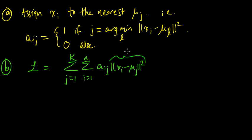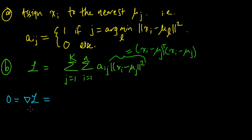This squared Euclidean distance can be written as the dot product of (x_i − μ_j) with itself. Now we do the standard calculus thing: set the gradient of L with respect to μ_j equal to zero. This decouples into a sum of j terms, and since each term only depends on μ_j, we can minimize with respect to one μ at a time.